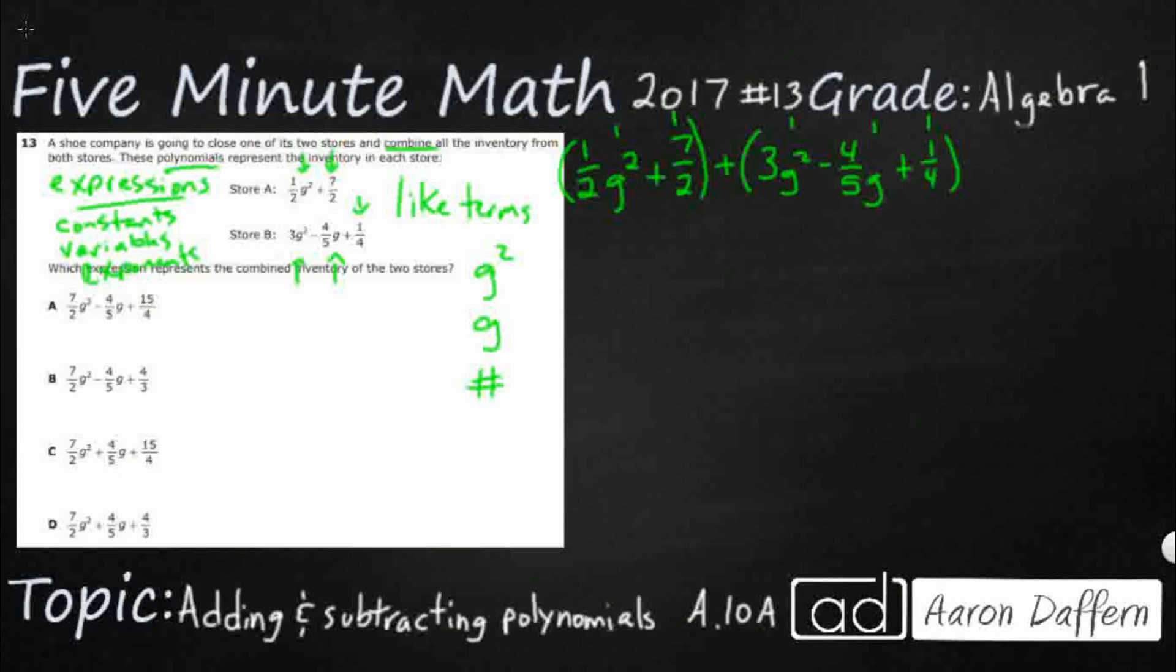So let me see what are my G squareds. I've got 1 half G squared. And then I've got a plus 3 G squared. So if I were to bring those together, that would turn into 1 half G squared plus 3 G squared is going to be 3 and a half G squared.